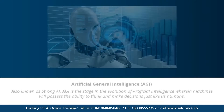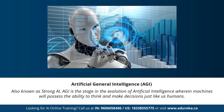Next we have artificial general intelligence, also known as strong AI. This stage is the evolution of AI, wherein machines will possess the ability to think and make decisions just like human beings. There are currently no existing examples of strong AI, but it's believed we'll soon be able to create machines as smart as humans. Strong AI is considered a threat to human existence by many scientists, including Stephen Hawking, who quoted that the development of full AI could spell the end of the human race.